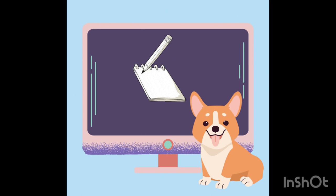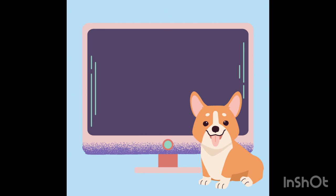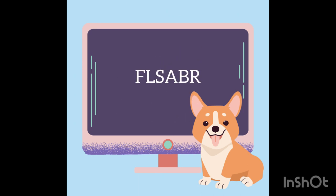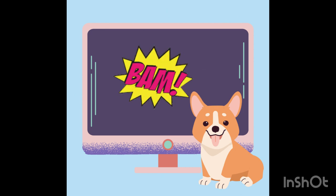You could also use a sentence as a password. For example, start with the sentence: Fluffy likes sticks and belly rubs. That is a long password, so to shorten it, take the first letter from each word to get F-L-S-A-B-R. You can then substitute some symbols and add in the year to get 22FLS@BR — and there you have a new strong password.